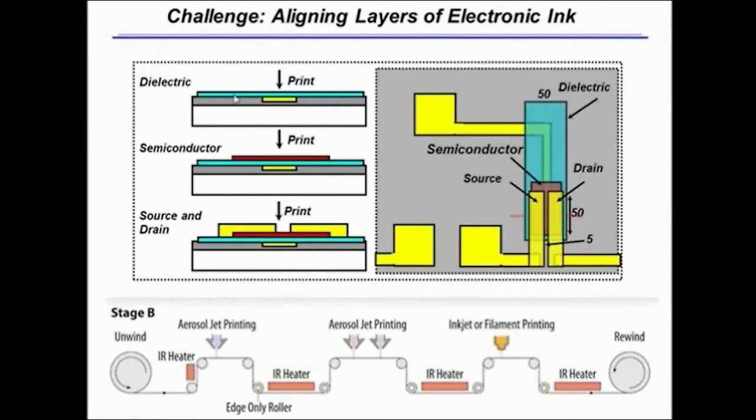This diagram shows what would be involved. You have to print a gate electrode and then a dielectric layer, then print a semiconductor layer aligned to the gate, and finally print source and drain electrodes aligned to the semiconductor.